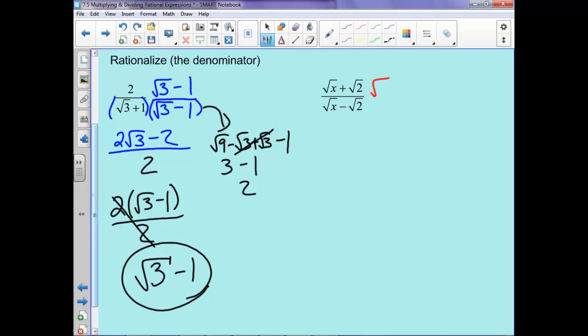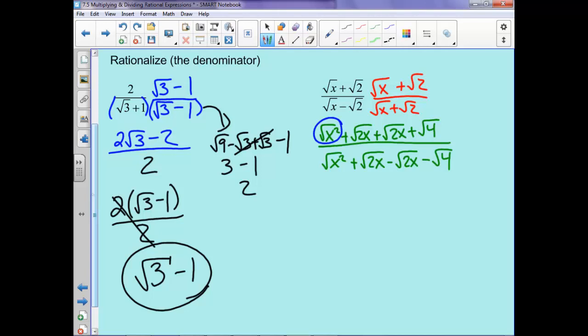Now over here, the conjugate is root x plus root 2, so now we'll have a lot of distribution going on. So in our numerator, we'll have root x squared plus root 2x plus root 2x plus root 4. And in our denominator, we'll have root x squared plus root 2x minus root 2x minus root 4. So in our numerator, root x squared is just x. When we combine these two, we'll have 2 root 2x's. And the square root of 4 is 2. In our denominator, these will cancel. Square root of x squared is x minus square root of 4 is 2. We can't do anything else. So we are done.